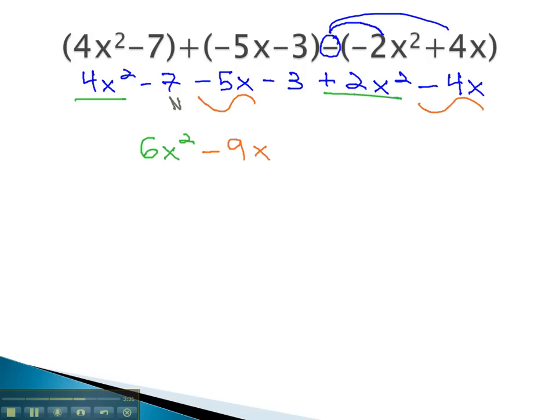And then, finally, the numbers, negative 7 minus 3 is negative 10. No more like terms. We have our final solution.